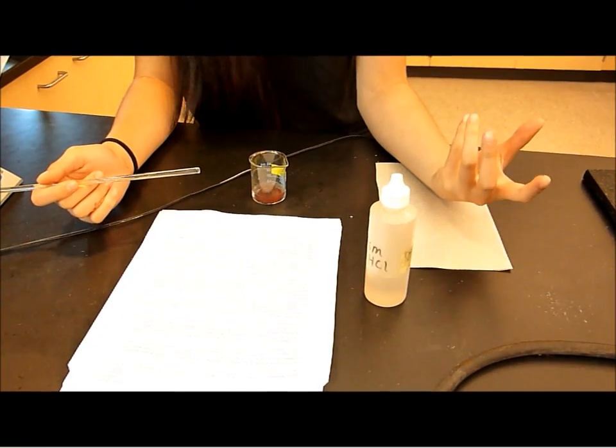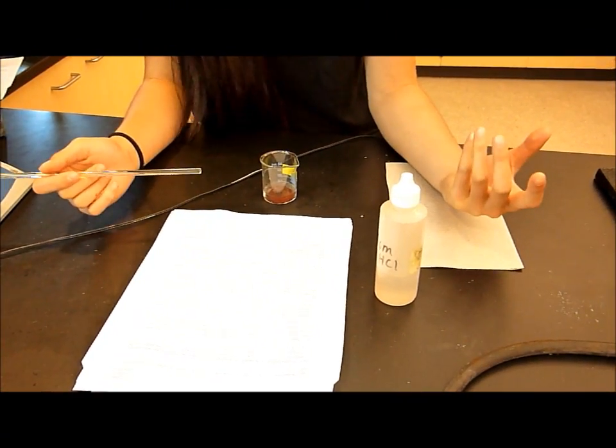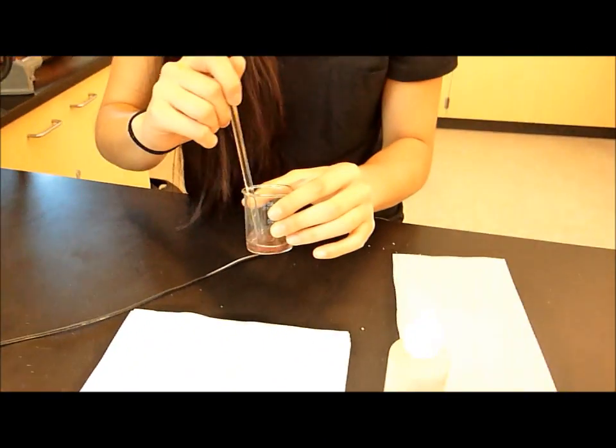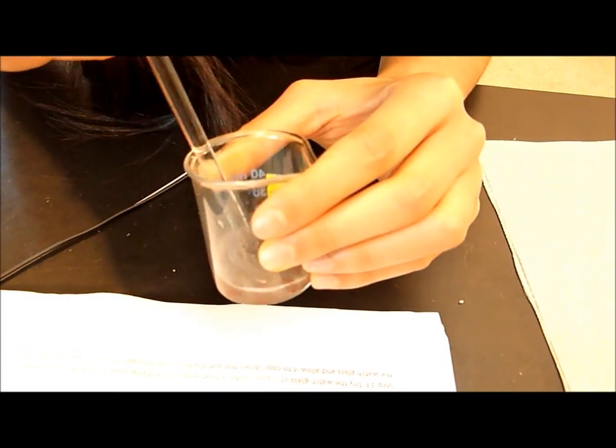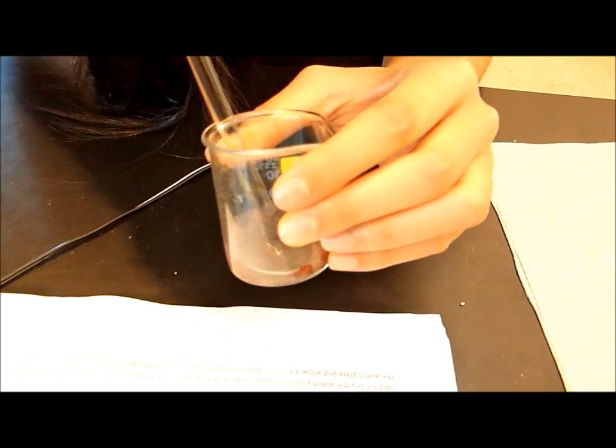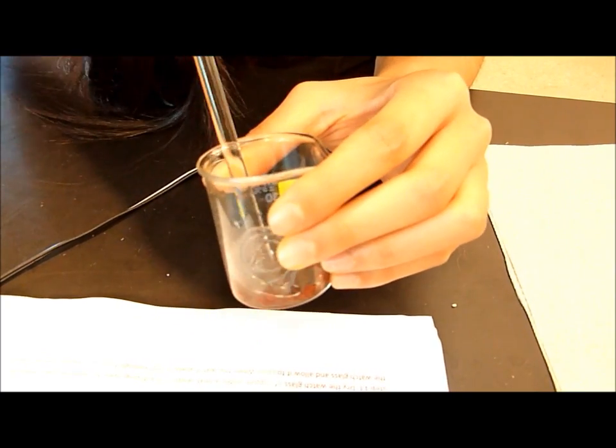Use a glass stirring rod to scrape off as much copper as possible from the aluminum wire. And then, when you're done, slide the wire up the wall of the beaker and out of the solution with the glass stirring rod.